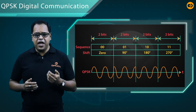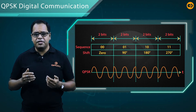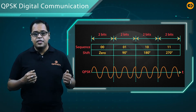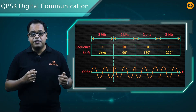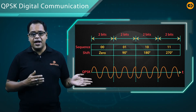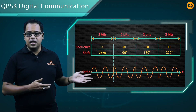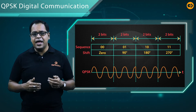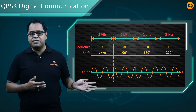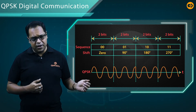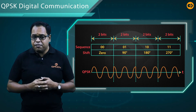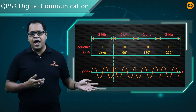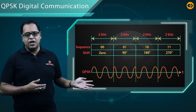The phase for 00 is angle zero, as shown in the figure. The phase for 01 is angle 90, as shown in the figure. The phase for 10 is angle 180, as shown in the display. The phase for 11, as we discussed earlier, is 270 degrees, as you can see in this figure.